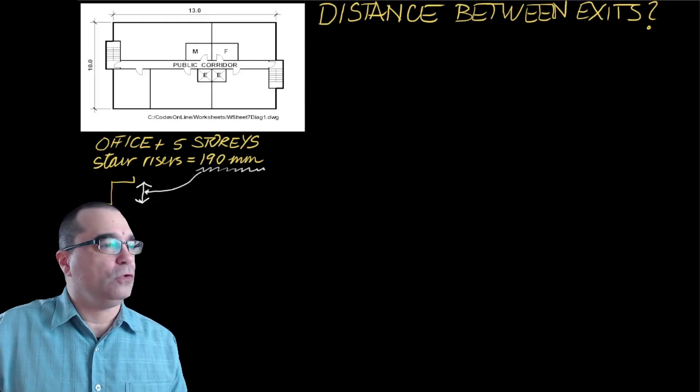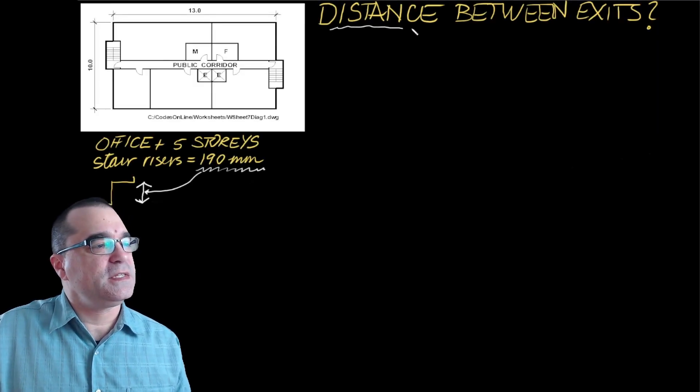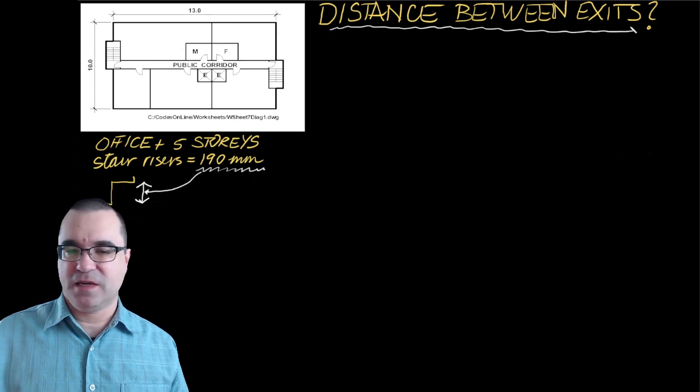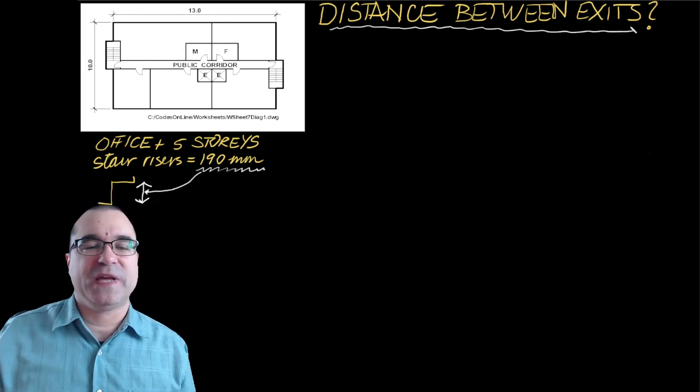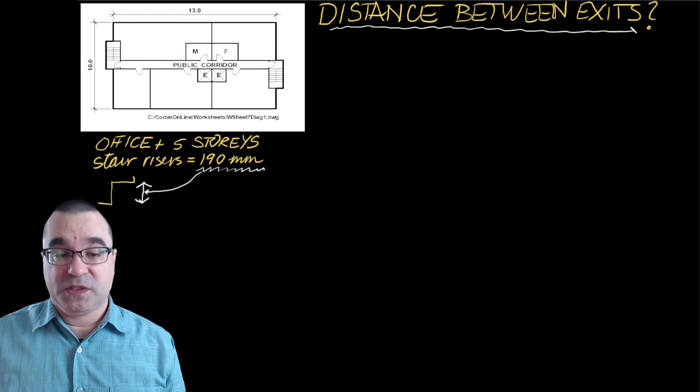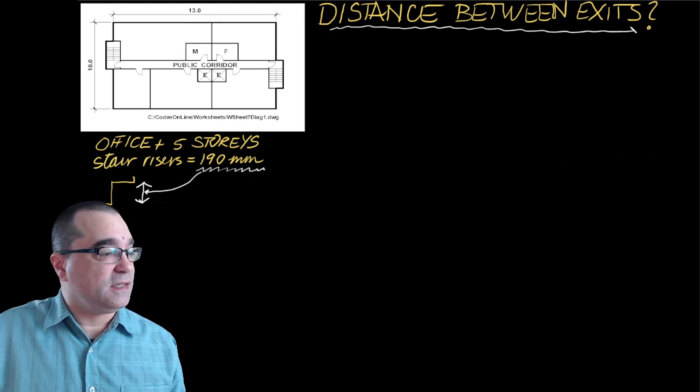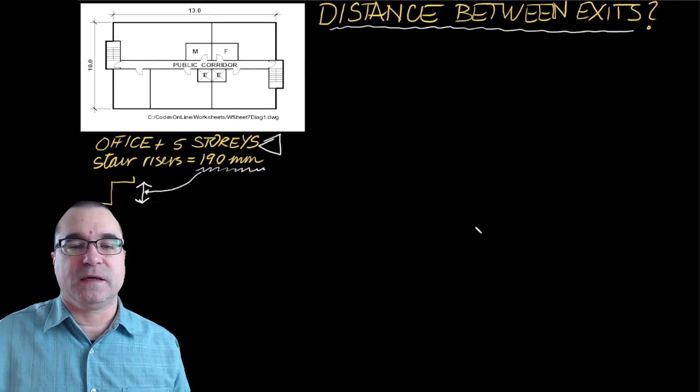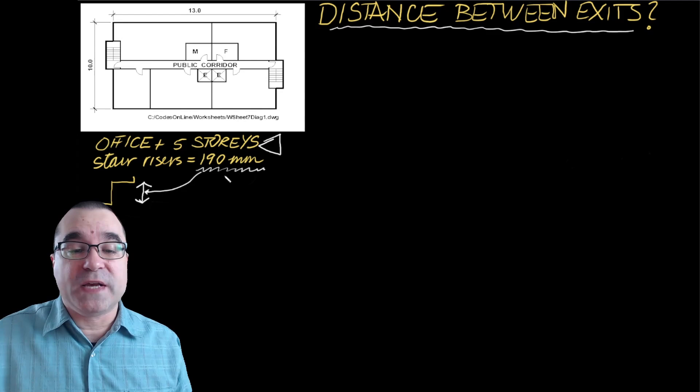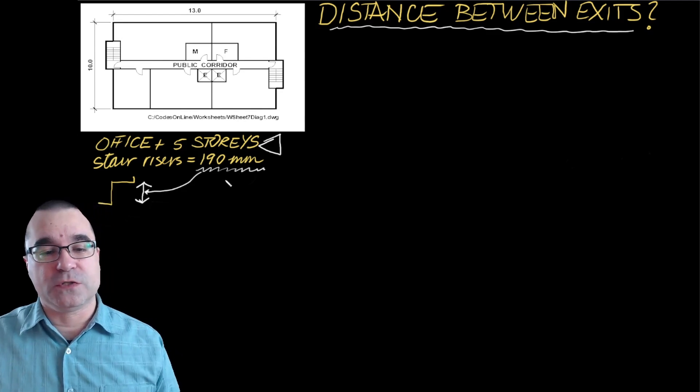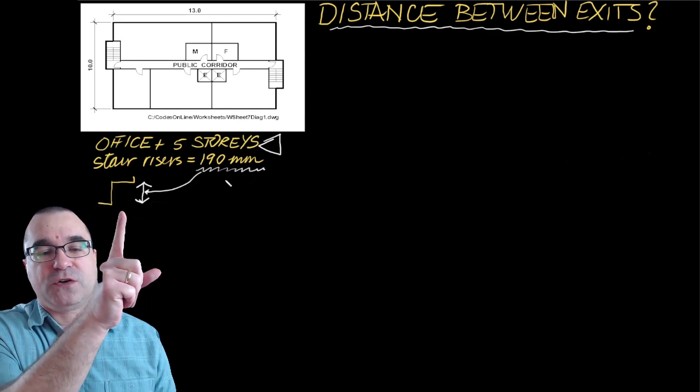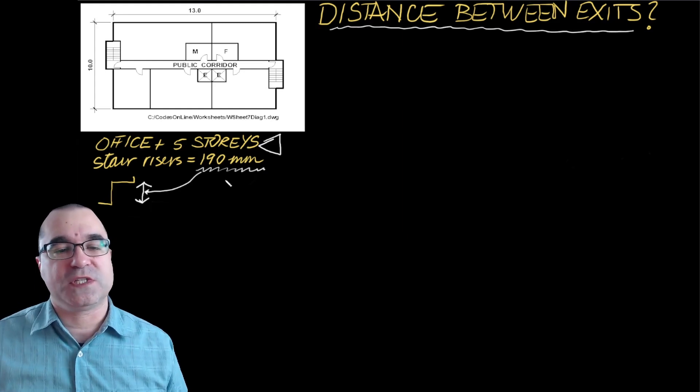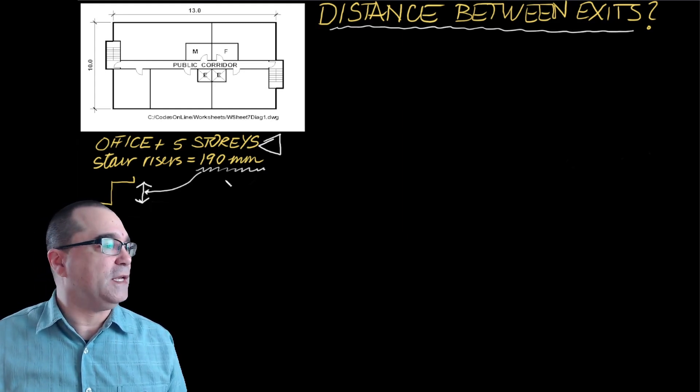For this first example, we will determine the distance between exits for this floor plan we see above. This building is a five-story office building, and the stair risers are 190 millimeters, meaning the vertical dimension of each step is 190 millimeters.